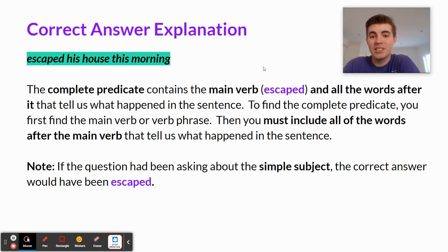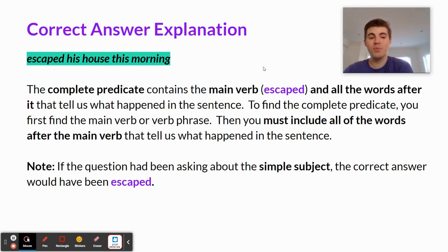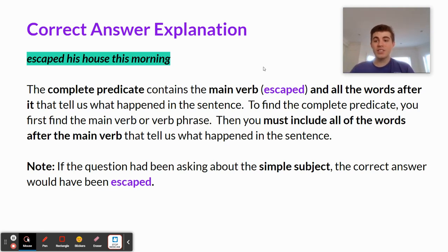The complete predicate contains the main verb, 'escaped,' and all the words after it that tell us what happened in the sentence. To find the complete predicate, you first find the main verb or verb phrase. Then you must include all of the words after the main verb that tell us what happened. As a side note, if the question had been asking about the simple predicate, the correct answer would have been 'escaped.'